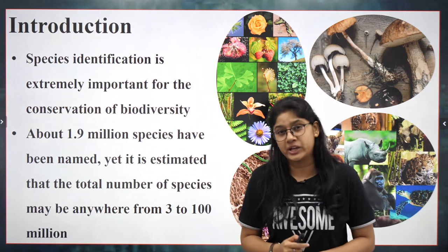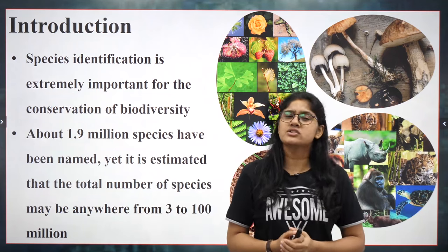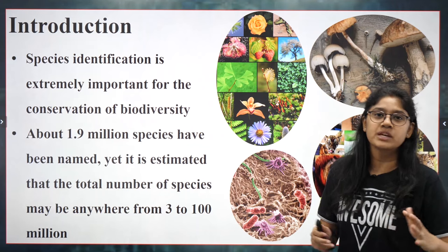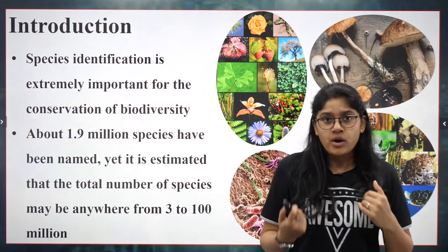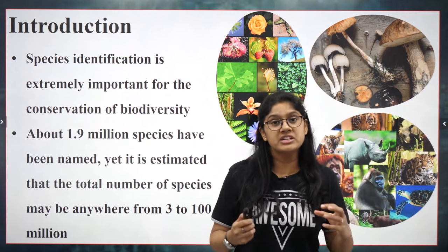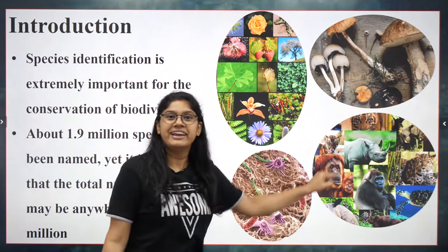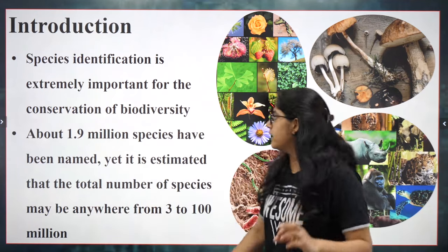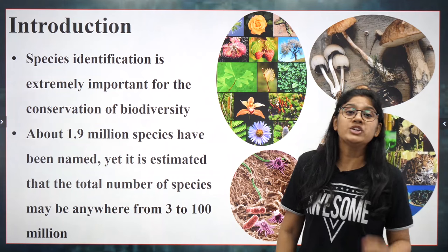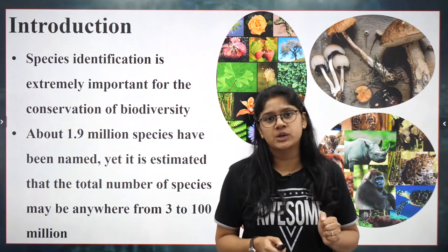How can we differentiate — how do we call a plant a plant, an animal an animal? We'll be learning all these things in this chapter. To begin with the understanding of living organisms and biodiversity: different types of life forms and different types of varieties coming together are called biodiversity. We have 1.9 million species, and we usually identify species based on their groups and the different characteristics they have.